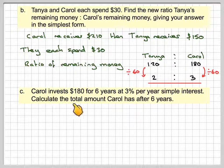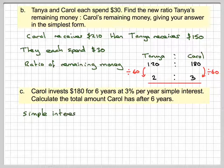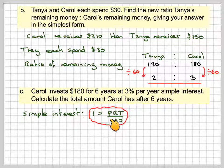Carol invests $180 for 6 years at 3% per year simple interest. Calculate the total amount Carol has after 6 years. Well, the simple interest formula is going to be I, interest, is P, the original amount, R, T, divided by 100. R is the rate, T is the time in years.